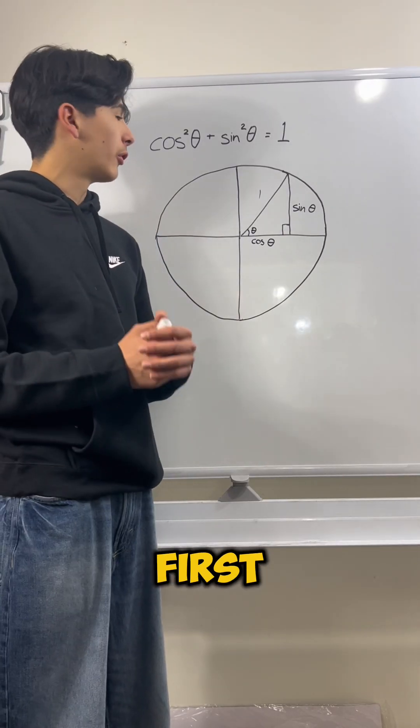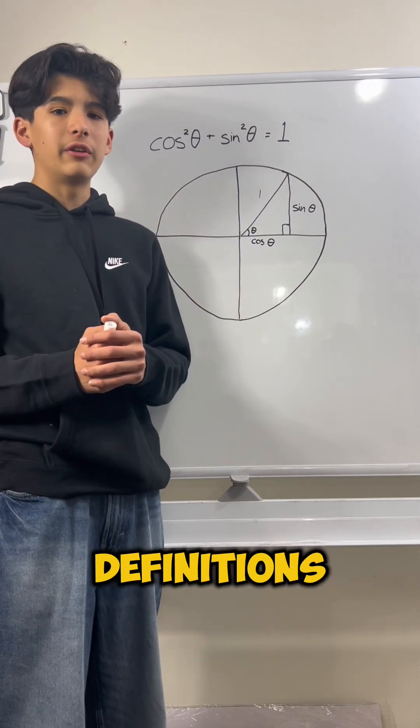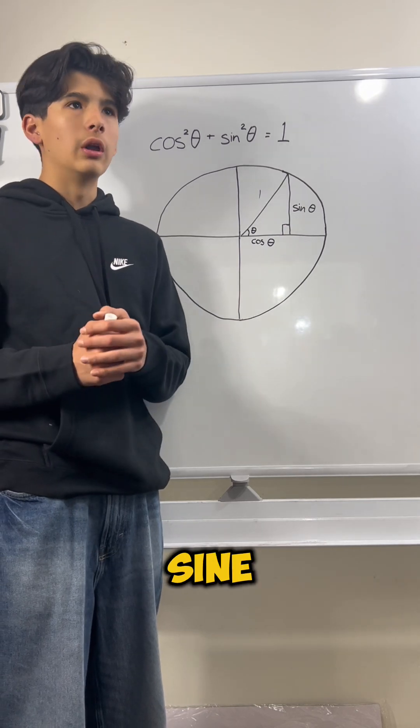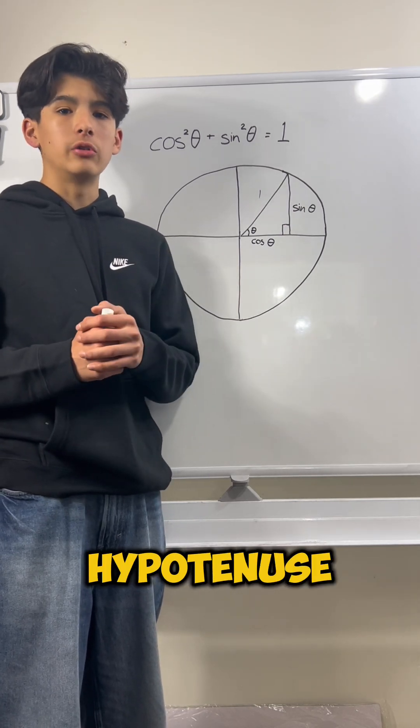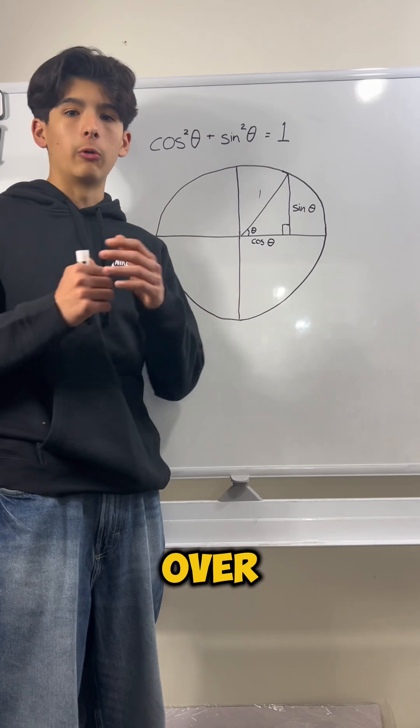In order to answer that question, we first have to think about our sine and cosine definitions. Remember SOHCAHTOA: sine is opposite over hypotenuse, and cosine is adjacent over hypotenuse.